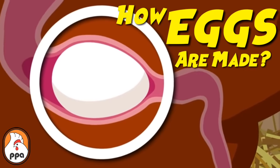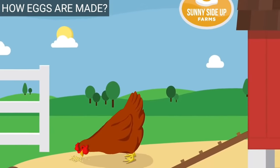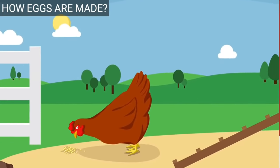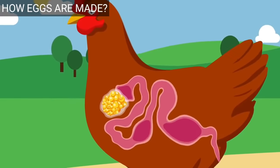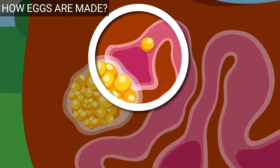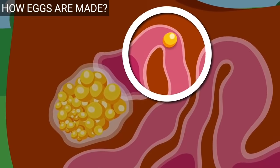From hen to table: how an egg is made. The journey of an egg starts when a yolk containing the unfertilized ovum is released into the oviduct. If sperm is present, the egg will be fertilized. Remember, a hen doesn't need a rooster to lay eggs.